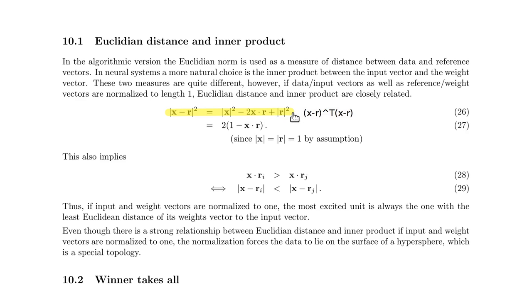So this is this part, and if you now assume that r is normalized, this would be one. Oh, that both vectors are actually normalized. This would be one, this would be one, and then you have only this as a variable term. So this boils down then to two times one minus x times r.